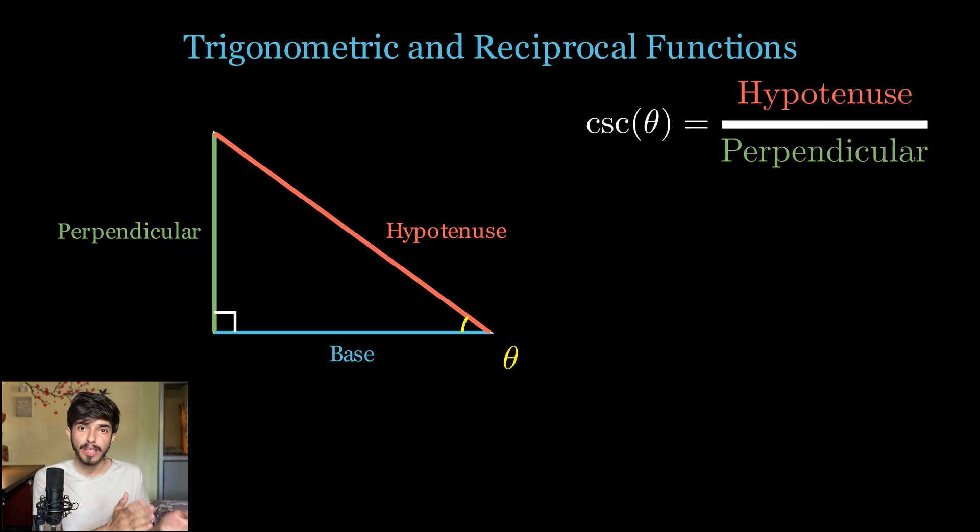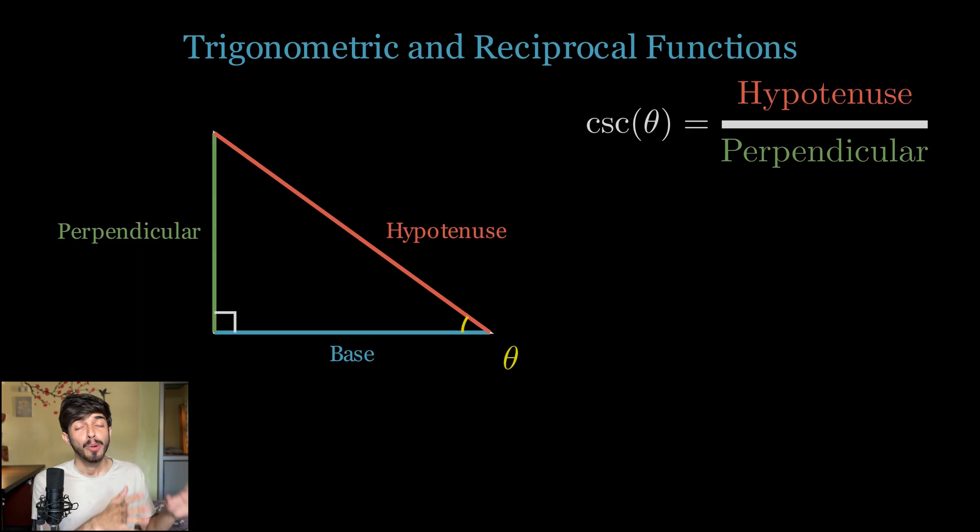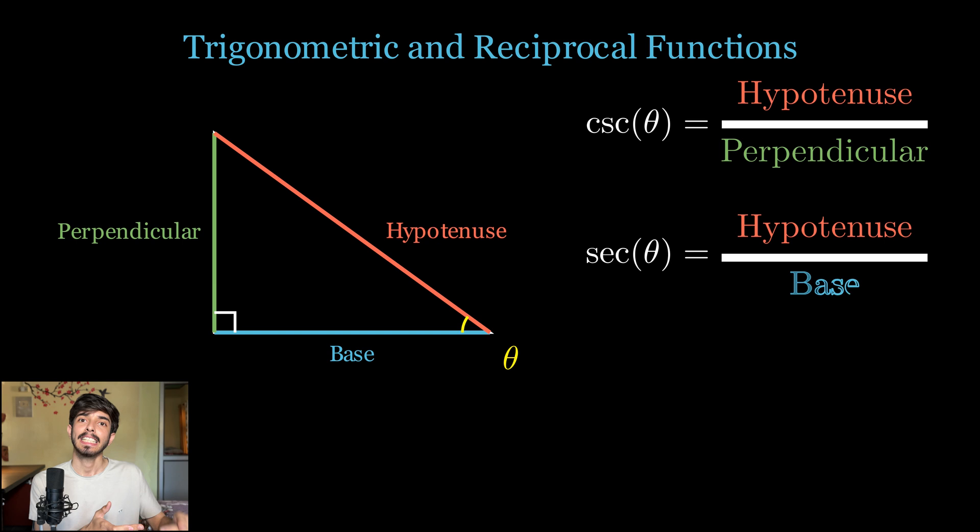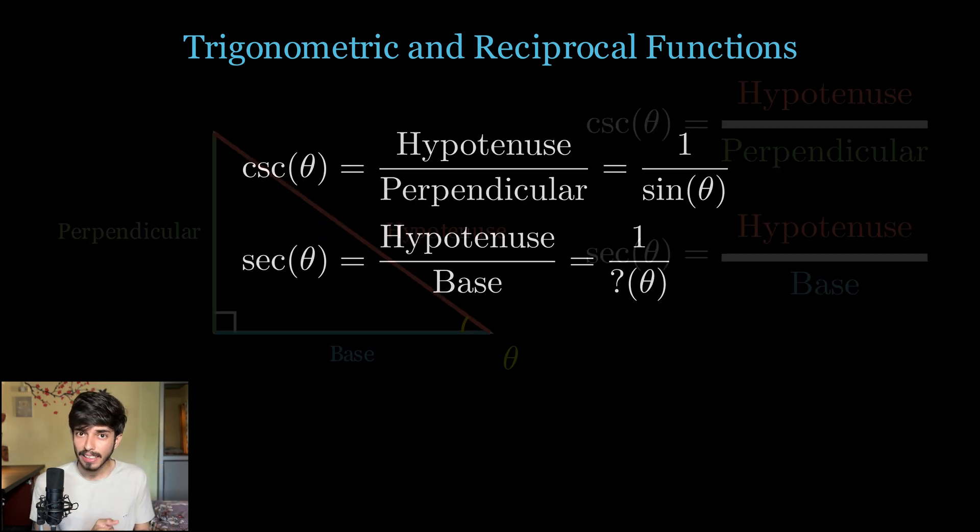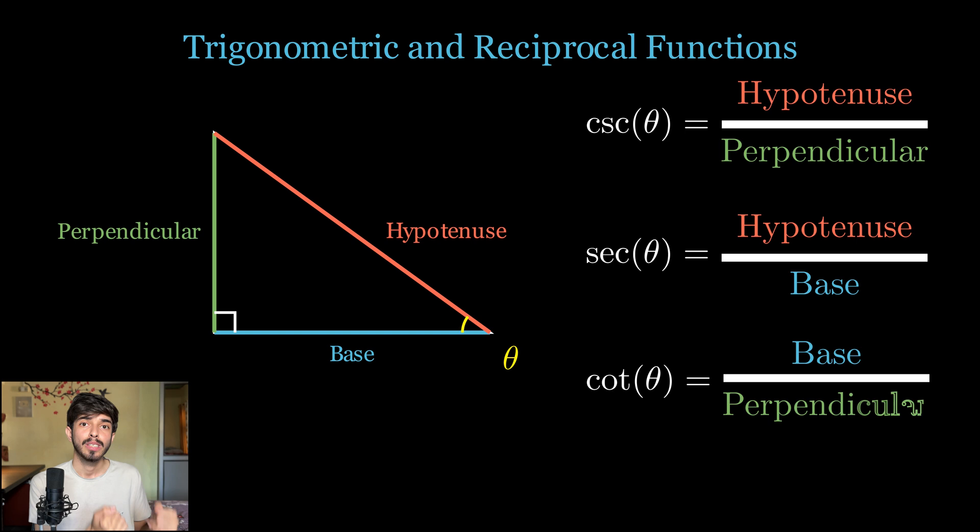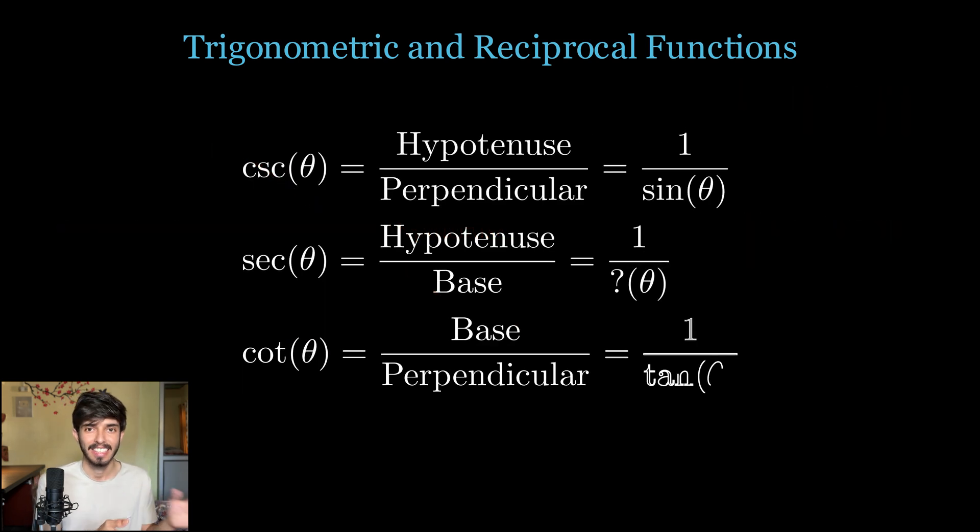Now similarly, hypotenuse upon perpendicular is cosecant theta. This is just the reciprocal of sin theta. Hypotenuse upon base is equal to secant theta. Tell me in the comments what's the reciprocal of secant theta. Base upon perpendicular is known as cot theta. This is the reciprocal of tan theta.